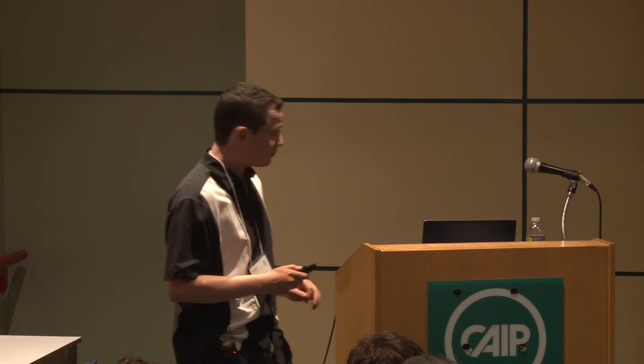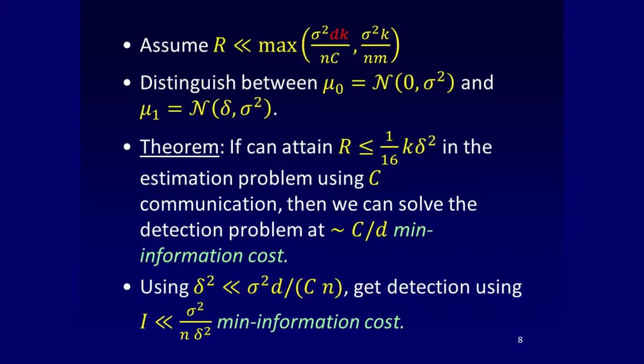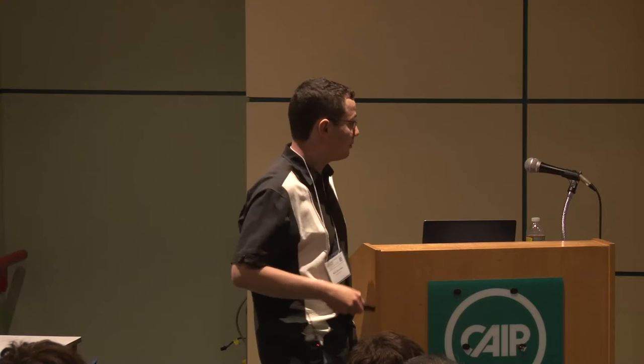Delta is the separation between the two distributions. If you want to detect mu_zero from mu_one, if delta gets smaller, this problem gets harder, and to solve it you need the information cost R to be smaller. So we need to rule out a detection solution with mean information cost of sigma-squared over N times delta-squared.